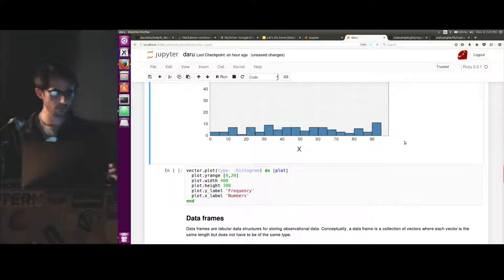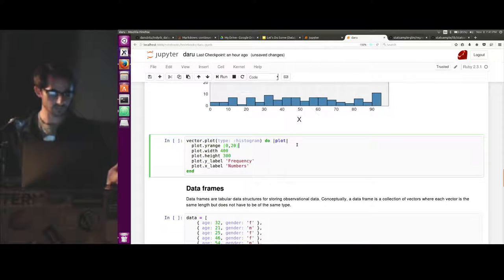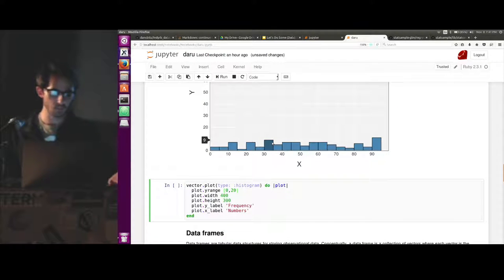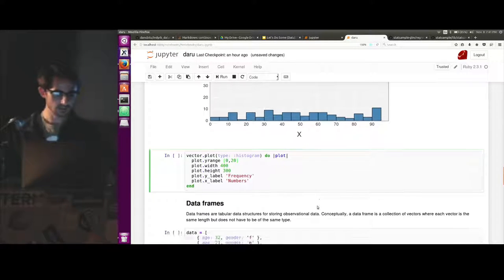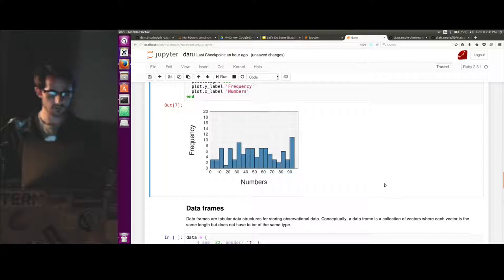To make this look a little better, you can pass a block to the method and specify things and make it look a little nicer. So here I'm just saying I want a maximum Y value of 20, specify a width and height, and give it some labels. So it gives it looking a little nicer, a little easier to process.